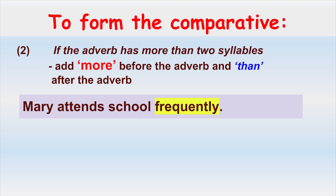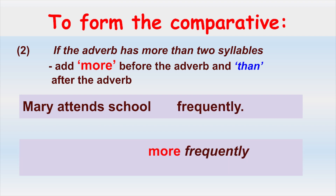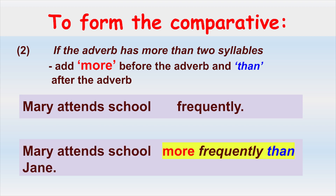If we compare how often Mary attends school to how often her friend Jane attends school, following the rule, we place 'more' in front of the adverb 'frequently' and 'than' after it. Our comparative sentence becomes: Mary attends school more frequently than Jane. We could also use 'less': Mary attends school less frequently than Jane. More and less can be interchangeable according to the circumstances.